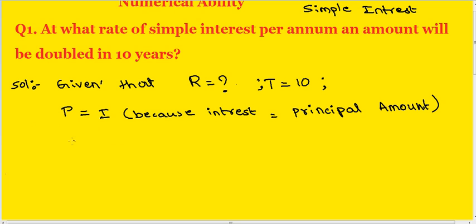The formula is Simple Interest: I = PTR/100. Here, from this, R = 100 × I/(PT).